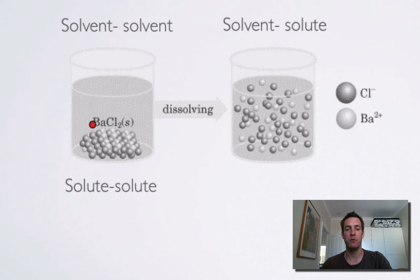So before something dissolves, here we've got some barium chloride, which is in a solid state in a beaker of water presumably. There are solvent-solvent forces, so that is forces between the solvent molecules that are going to have to be broken to get the solute particles in between them. And there's also solute-solute forces, which are going to have to be broken by the solvent in order to split this solute up.